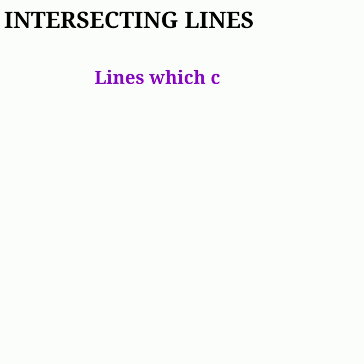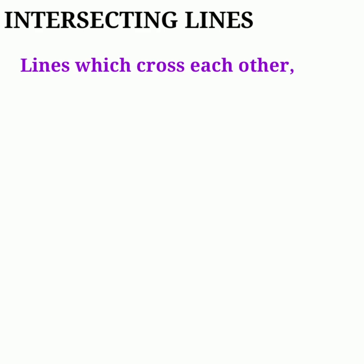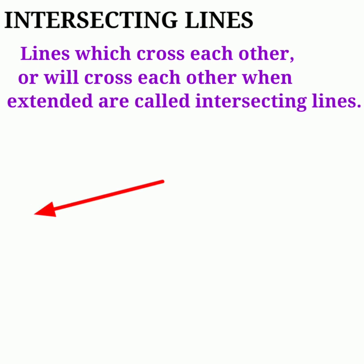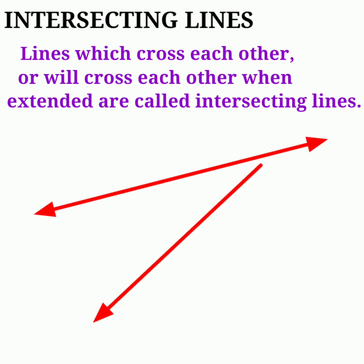Lines which cross each other, or will cross each other when extended, are called intersecting lines. Lines PQ and RS cross each other, so lines PQ and RS are called intersecting lines.